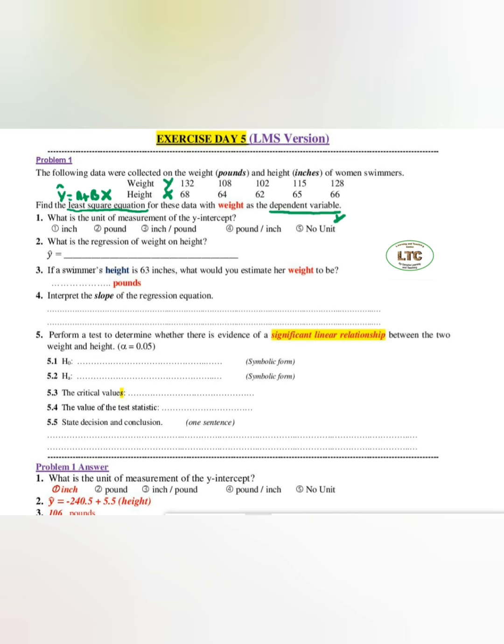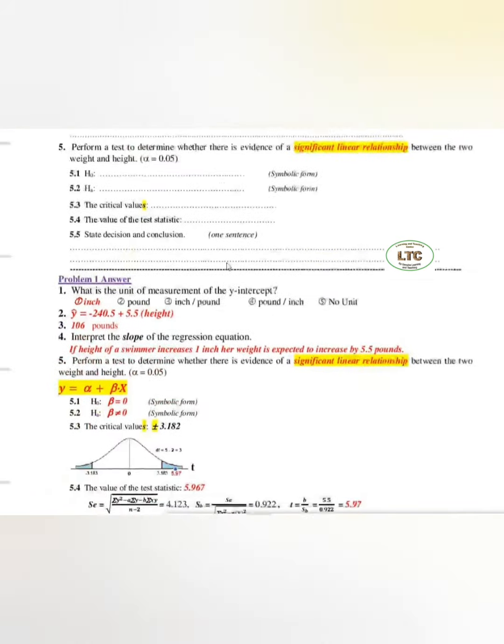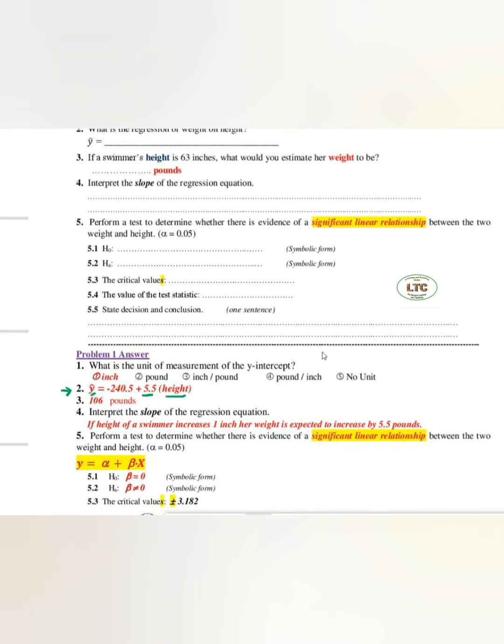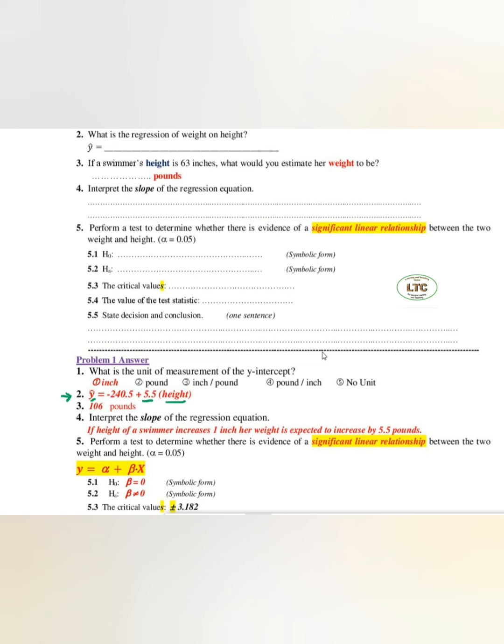After that you will get y hat equals a plus b times x. It will be negative 240.5, b will be 5.5, x is height, y is weight. You get this equation here for question number 1, then question number 2.